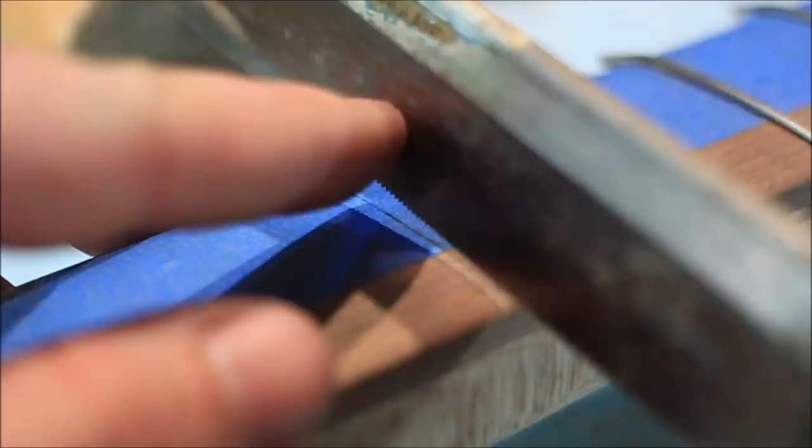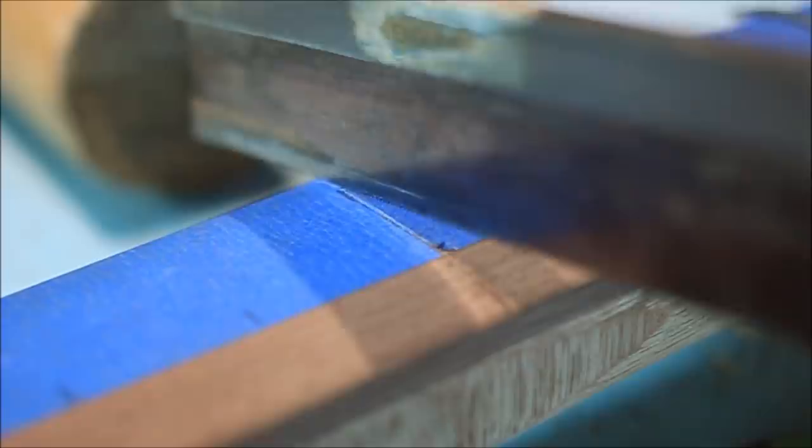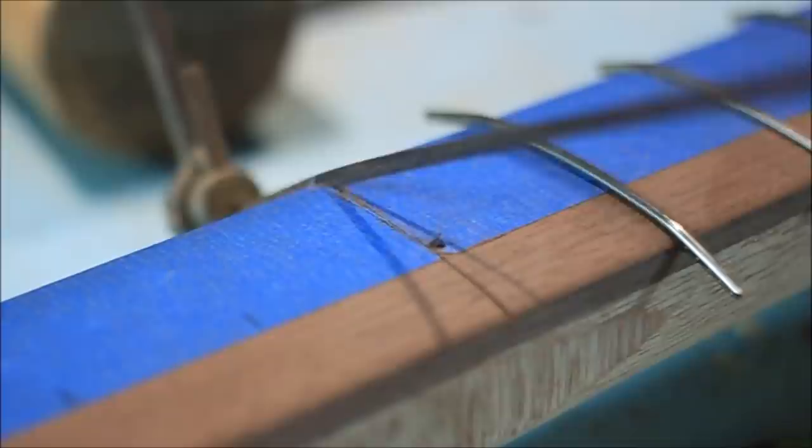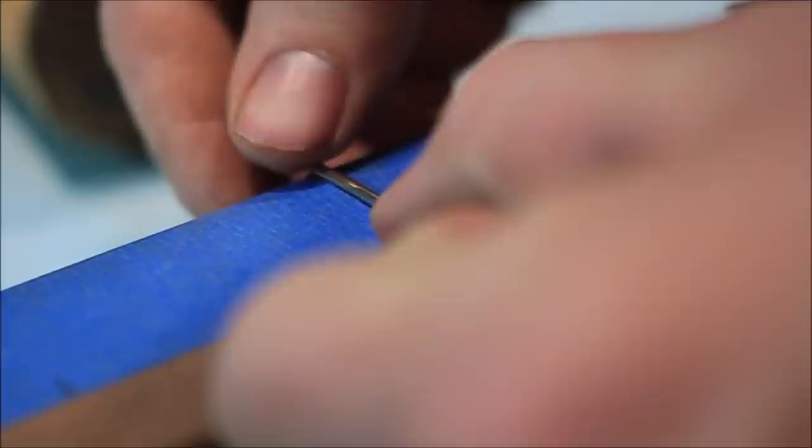So as a close up for the process, I took my combination square, rested it on the previous fret, made a mark, cut into it with this gent saw that has a very tiny kerf, and then opened up the kerf for the fret wire with this coping saw. Then I just slid in the fret wire, bent it to shape, and hammered the edges down with my wooden mallet.